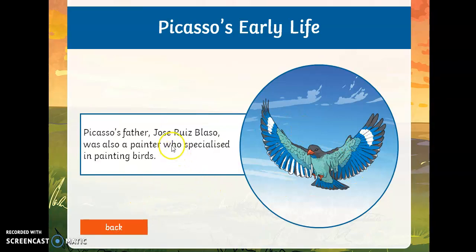Picasso's father, José Ruiz Blasco, was also a painter who specialized in painting birds. But when Picasso turned 13, José Ruiz Blasco gave up painting because his son was so good. He decided that there was nothing more he could do in the world in terms of painting except let Pablo fly.